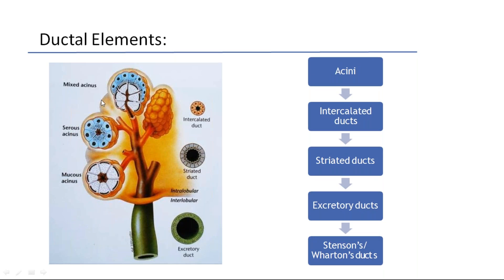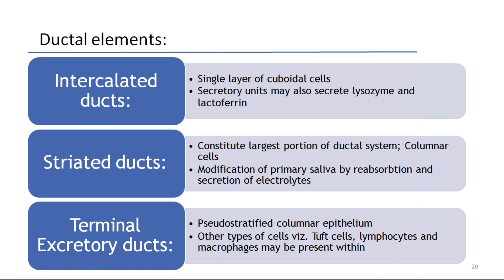This is the serous acinus, this is the mucous acinus, and these are both mixed acinus. From the acinus, secretions are collected through intercalated ducts, then the striated ducts, then the excretory ducts — which are Stensen's and Wharton's ducts respectively. There will also be intralobular and interlobular ducts. Intercalated ducts are a single layer of cuboidal cells; secretory units may also secrete lysozyme and lactoferrin. Striated ducts constitute the largest portion of the ductal system — columnar cells — for modification of primary saliva by reabsorption and secretion of electrolytes.